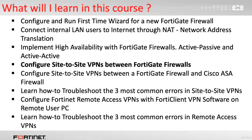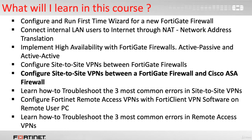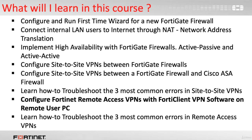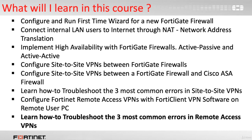Next, we will configure site-to-site VPNs between FortiGate Firewalls, and also configure site-to-site VPNs between a FortiGate Firewall and a Cisco ASA Firewall. But what do we do when things break? You will learn how to troubleshoot the three most common errors in site-to-site VPNs. We will wrap up the course after configuring Fortinet remote access VPNs with FortiClient VPN software on a remote user PC, and we will also cover how to troubleshoot the three most common errors in remote access VPNs.